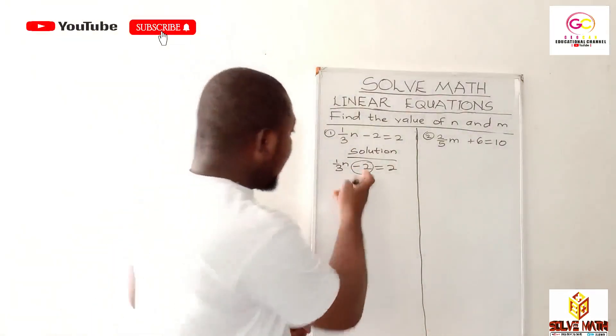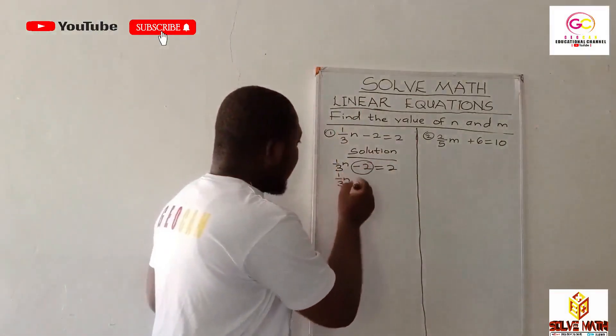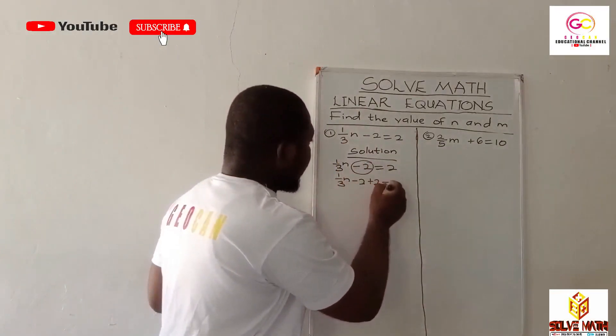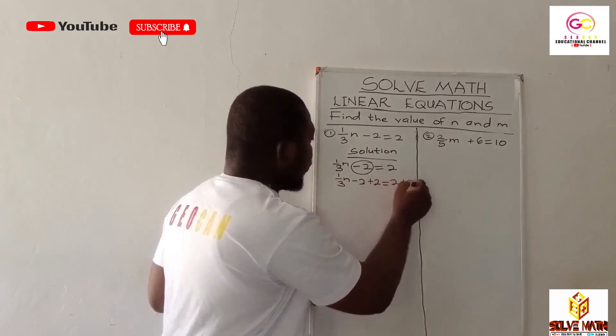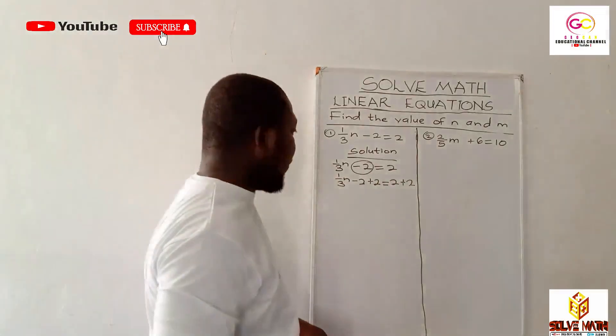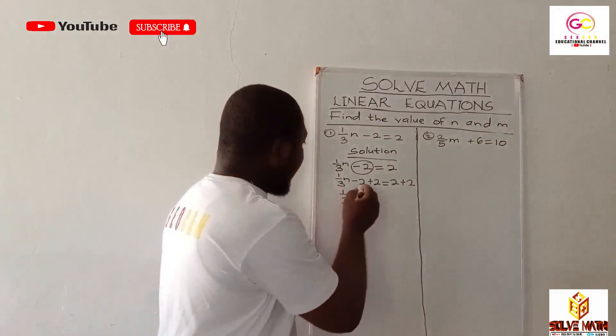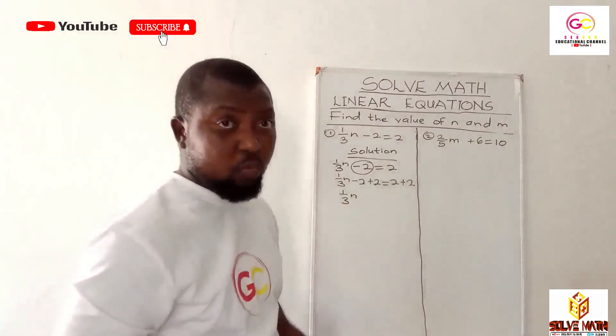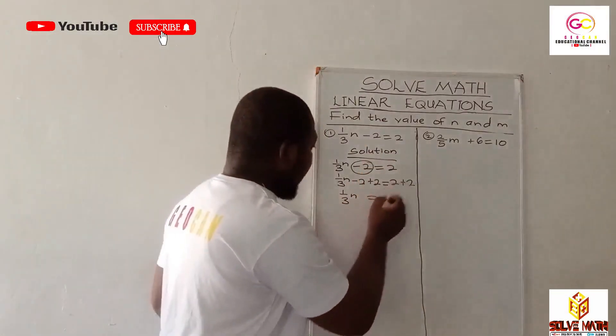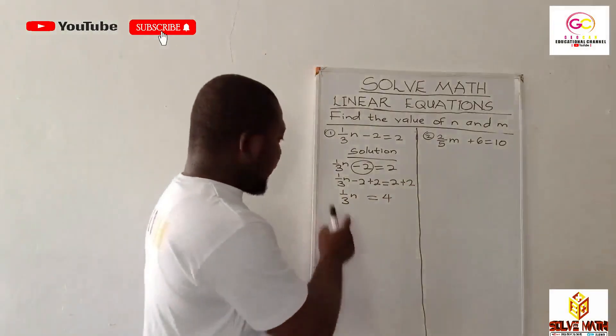It doesn't change anything, we'll just eliminate the negative two. So let's do that: 1/(3n) - 2 + 2 = 2 + 2. Now we're moving to the next step. We have 1/(3n); negative two plus two gives you zero, so just ignore that. It's equal to two plus two, we have four. We're at the next step.